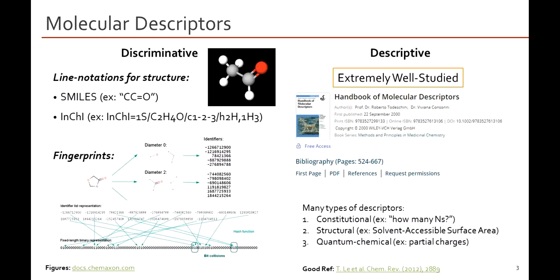Molecular descriptors are a very well-studied area. There are many different kinds of discriminative representations, which as we discussed in our last lecture, unambiguously and precisely define a structure. These include SMILES strings — we can encode something like ethanol as a simple line of characters — or InChI strings, which share the same goal as SMILES but ensure there is exactly one InChI string per molecule. You'll learn more about this in our practical exercises.